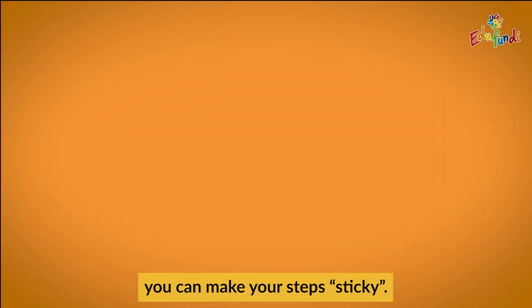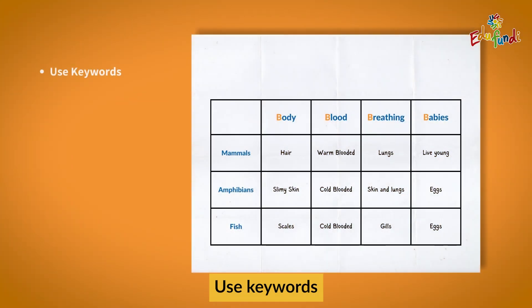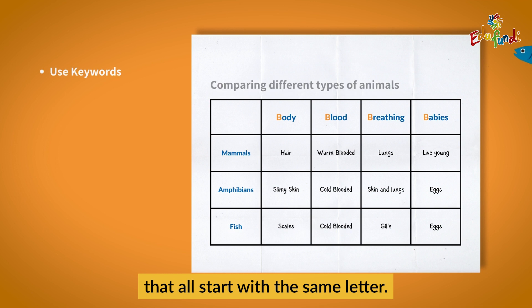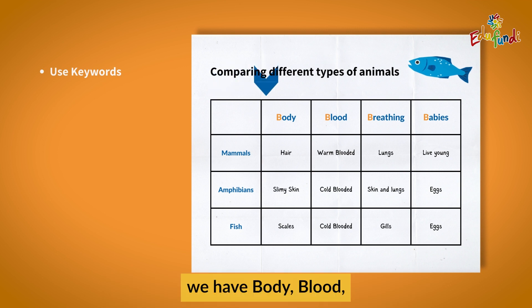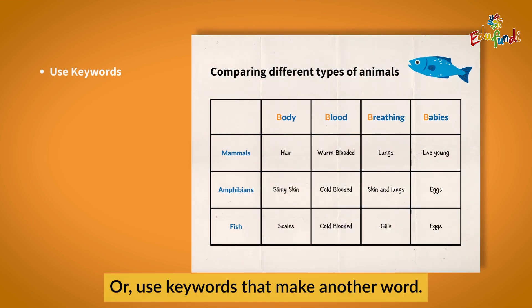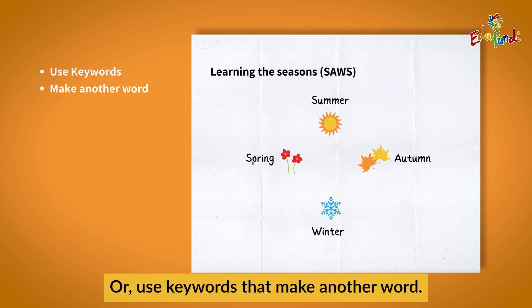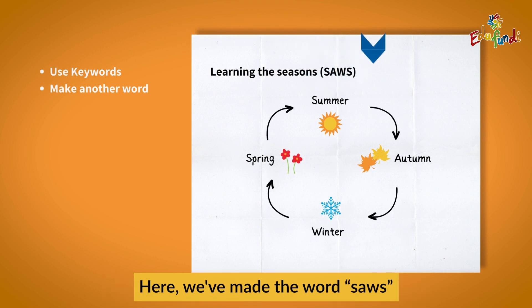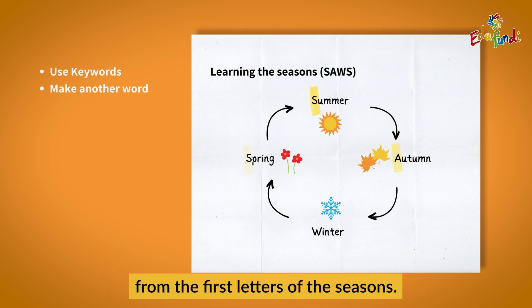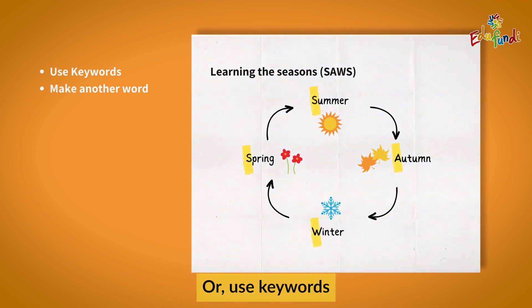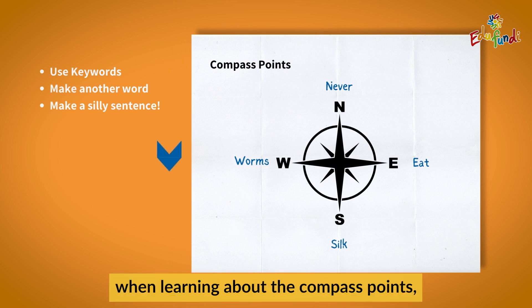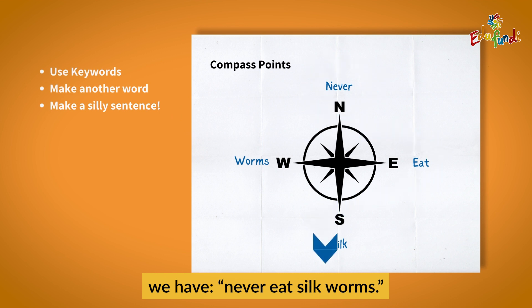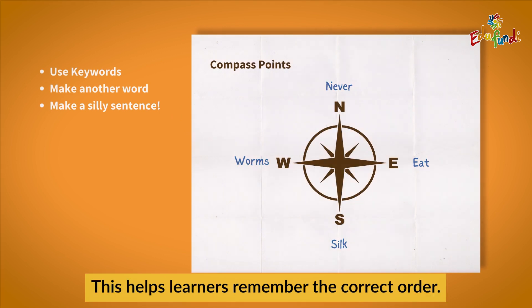Here are some ways you can make your steps sticky. Use keywords that all start with the same letter — for example, when comparing different types of animals, we have body, blood, breathing, babies. Or use keywords that make another word: here we have made the word SORES from the first letters of the seasons. Or use keywords that make a silly sentence — for example, when learning about the compass points, we have 'never eat silk worms.' This helps learners remember the correct order.